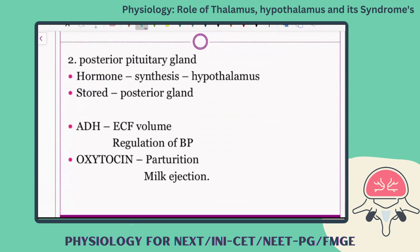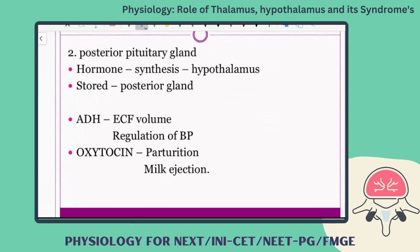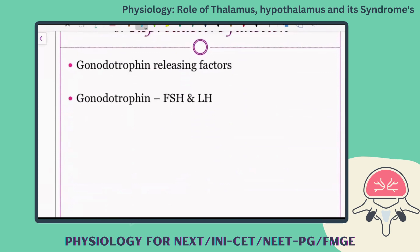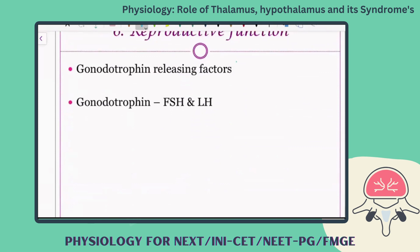Finally, oxytocin and ADH play a role in parturition and milk ejection. Gonadotrophin function plays a role in reproduction.